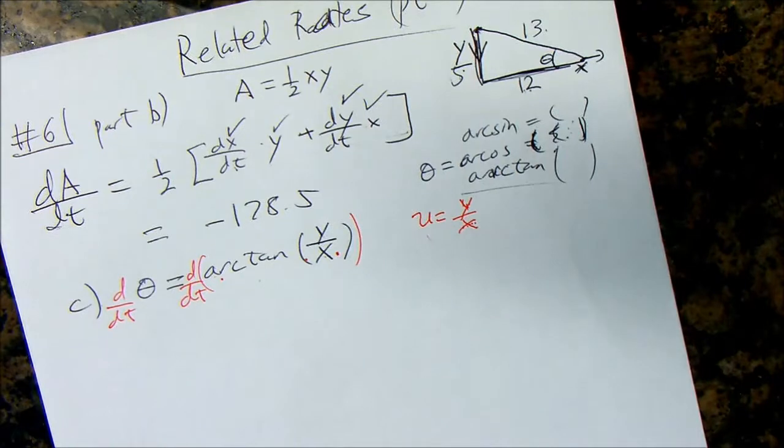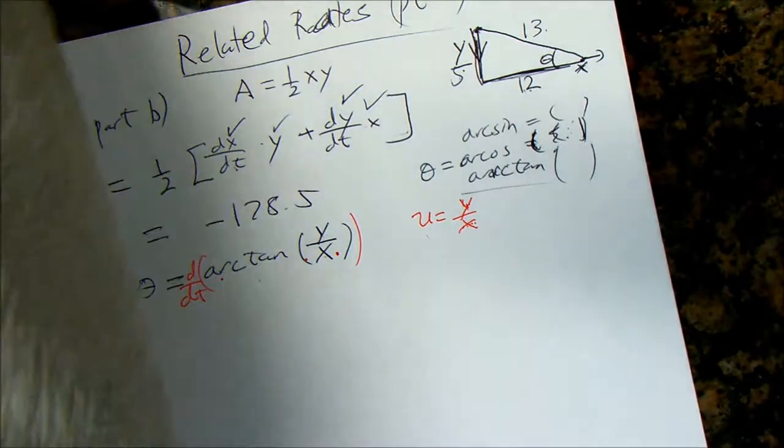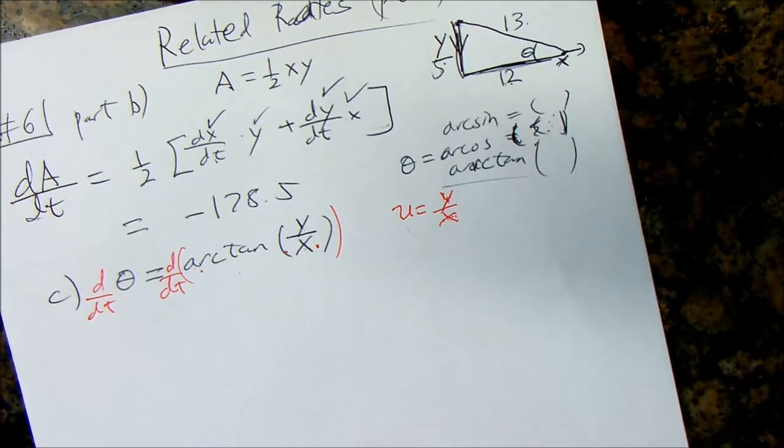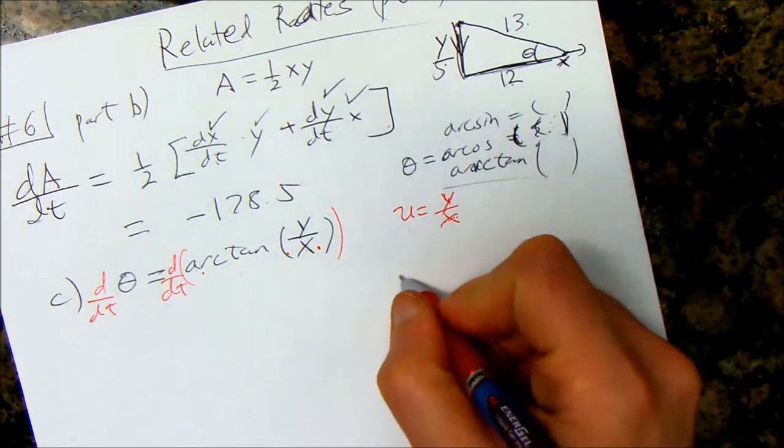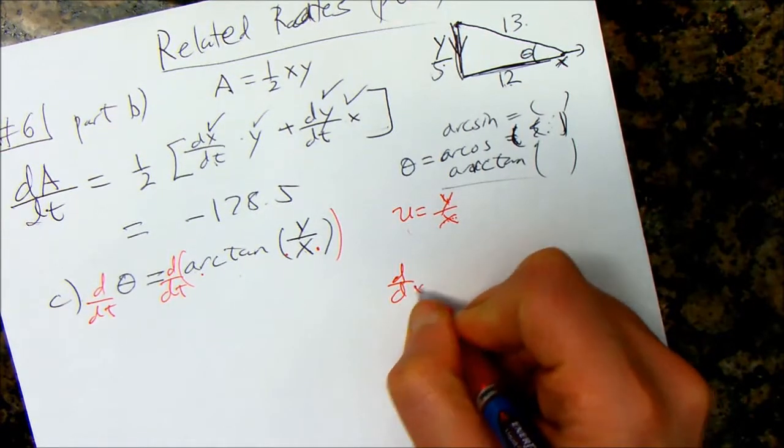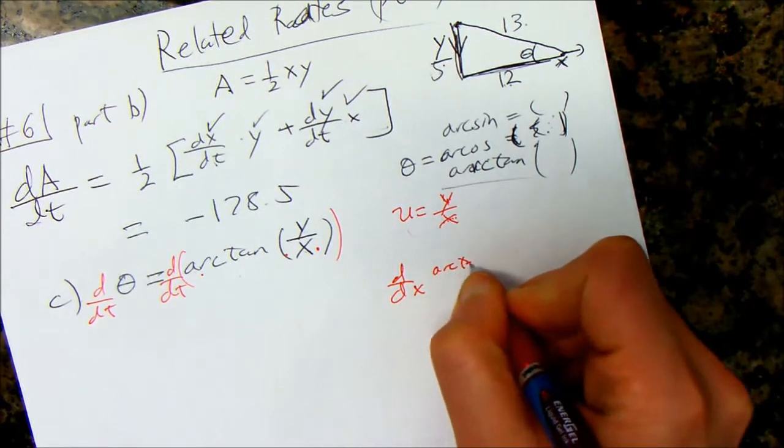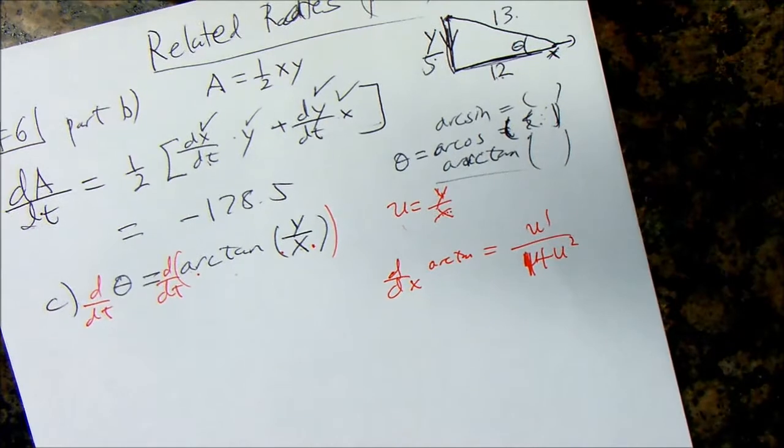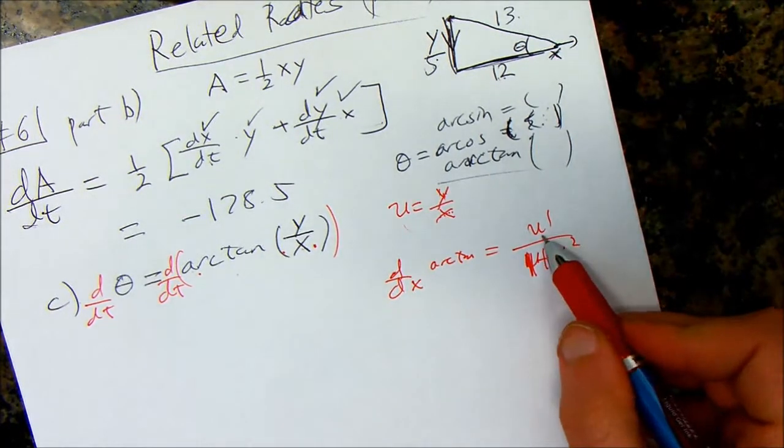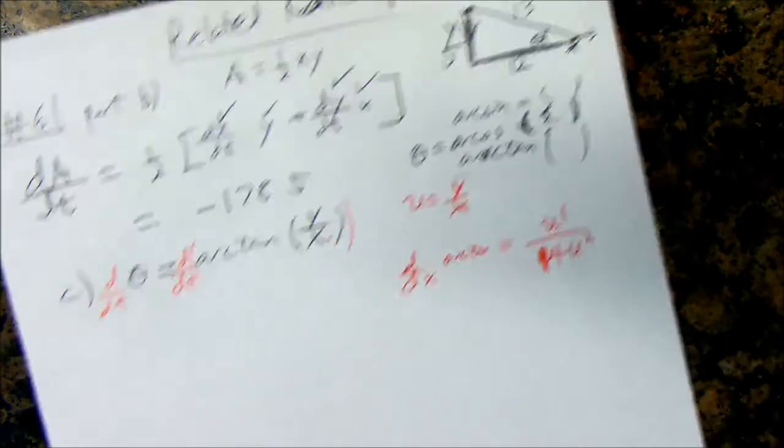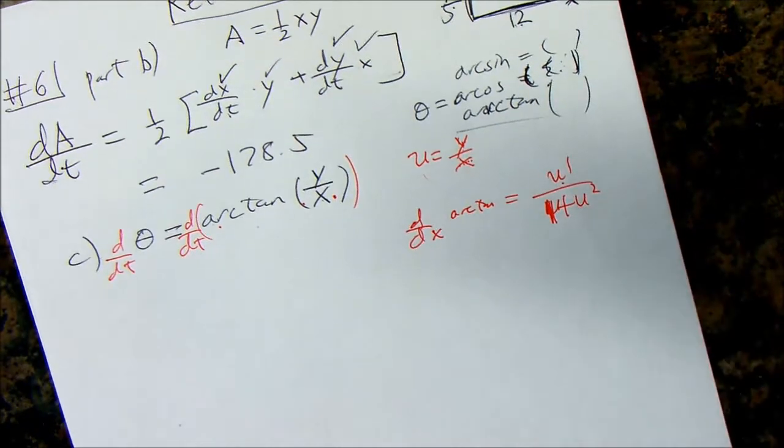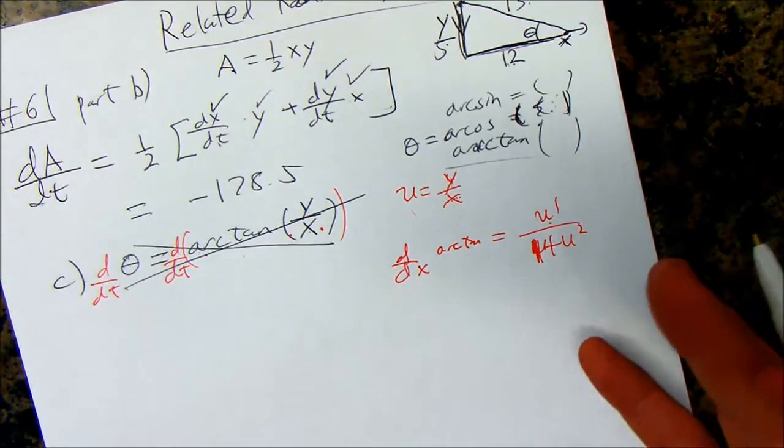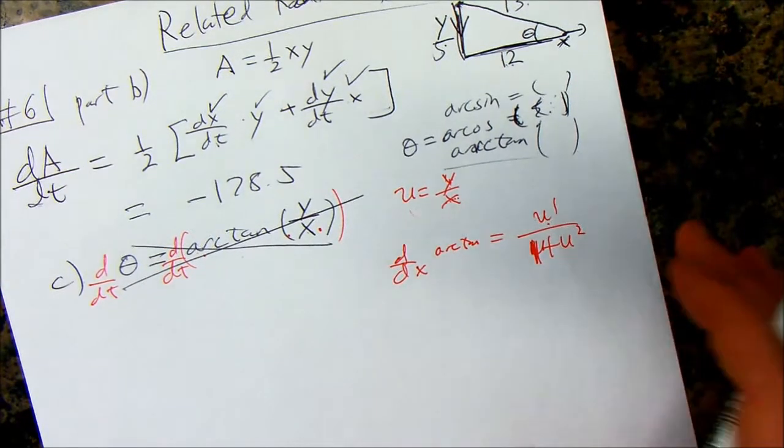So, arc tangent, well, what goes inside the parentheses? The definition of tangent is opposite over adjacent, right? So, I'm going to put in y over x. Don't put in the numbers. Put in the variables. Because we have to take the derivative of this. If I did that, and I took the derivative of this, why was that not a good idea?